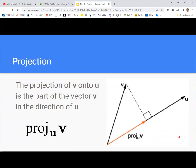All right, we're going to talk about the projection of v onto u. So this is denoted with P-R-O-J, the abbreviation of projection. And then the vector you're projecting is the big vector that's listed. And the one you're projecting onto is the little subscript one. So this is the projection of v onto u, right?